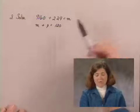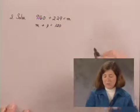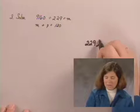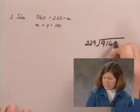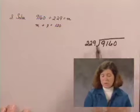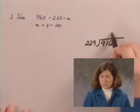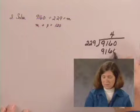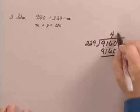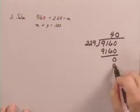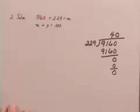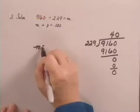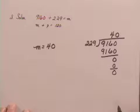We find M by dividing 9,160 by 229. 229 goes into 916 four times. 40 times 229 is 9,160. Subtract. This gives us a zero in the ones place. And we have an answer for M of 40. So she's already made 40 payments.